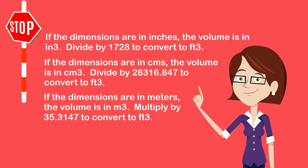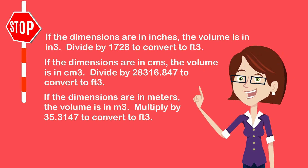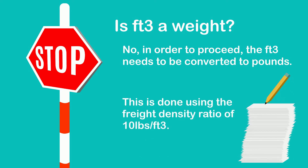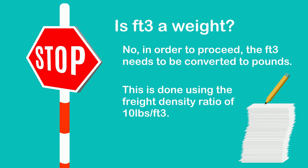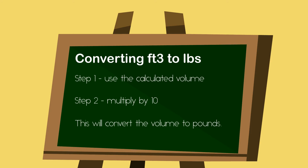If your dimensions are in meters, convert to cubic feet by multiplying by 35.3147. Now that you have the cubic feet, note that cubic feet is not a weight — you are looking for a weight in pounds. This is where your freight density ratio comes in. To apply the freight density ratio, multiply the cubic feet by 10. This will convert the cubic feet into pounds, giving you the volume weight, which you can then compare to the actual weight.